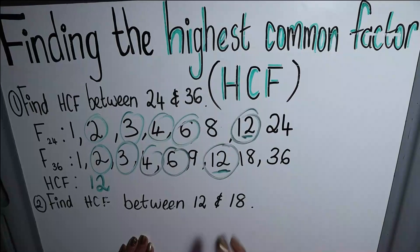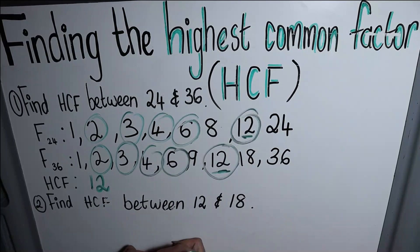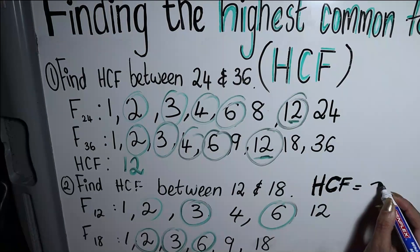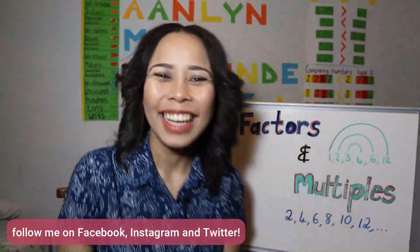Now I want you to look for the highest common factor between 12 and 18. Pause this video, find the highest common factor, and once you are done press play again to check if your answer is correct. That brings us to the end of our lesson on factors and multiples. Thank you so much for tuning in and watching right until the end. All the best for trying that exercise in your book and have a lovely day further.